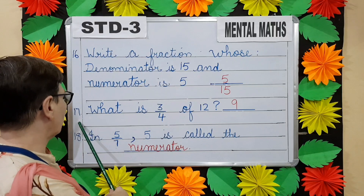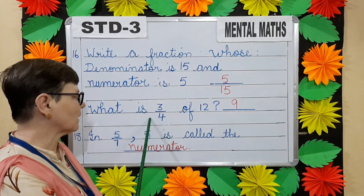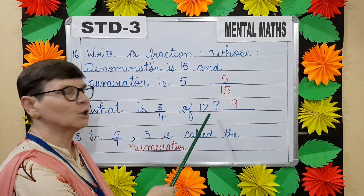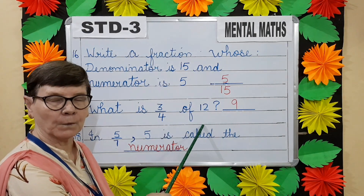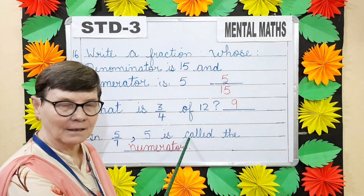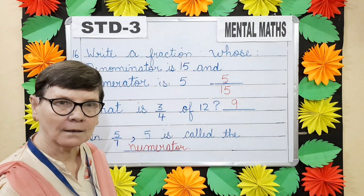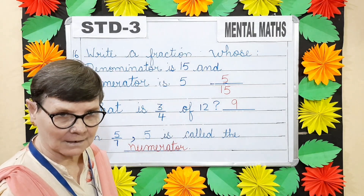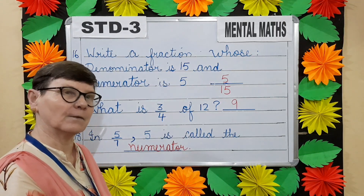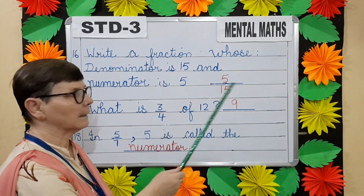Question number seventeen. What is three-fourth of twelve? Of means multiply children. So twelve threes are thirty-six. Thirty-six divided by four will give you nine.